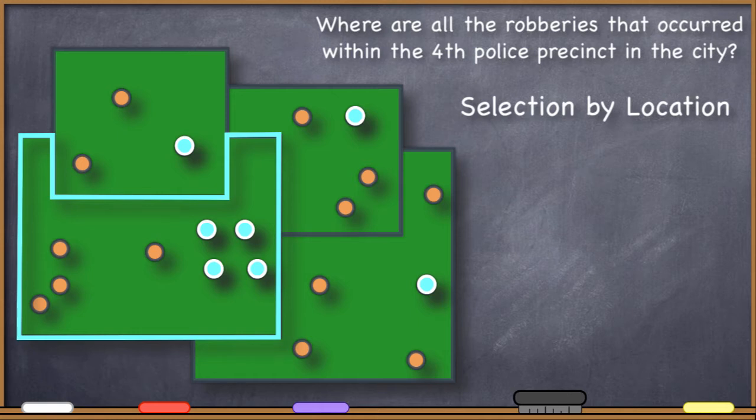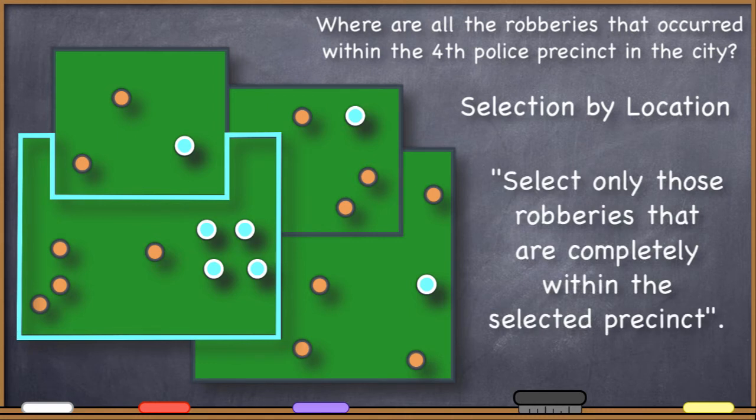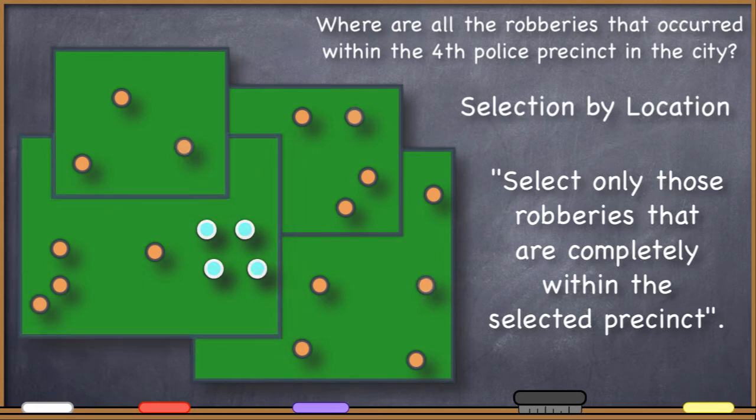The query might be to select all of those robberies that are completely within, that's our spatial relationship, completely within the fourth police precinct. And that would return your answer.